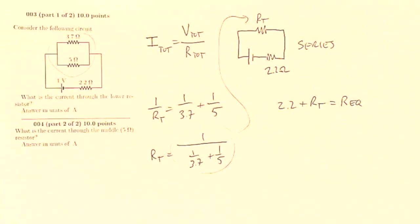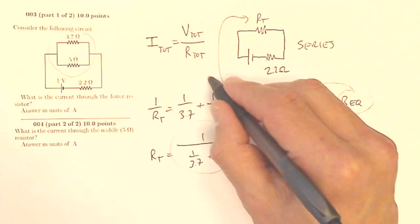Now why did I want to do all of that? Well, I needed to know how much current was flowing through this bottom resistor. If I have the equivalent resistance of the circuit, this is what I need to plug into here.